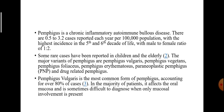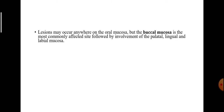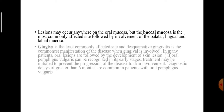Pemphigus vulgaris is the most common form of Pemphigus, accounting for about 80% of cases. In the majority of patients it affects the oral mucosa and is sometimes difficult to diagnose when only mucosal involvement is present. Lesions may occur anywhere on the oral mucosa, but the buccal mucosa is the most commonly affected site, followed by involvement of the palatal, lingual, and labial mucosa.